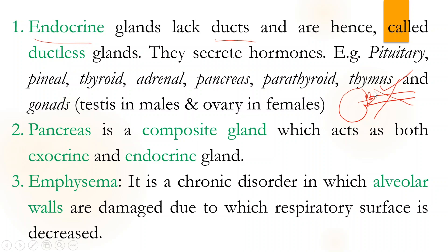Examples of endocrine glands are pituitary gland, pineal, thyroid, adrenal, pancreas, parathyroid, thymus, and gonads. These hormones go straight — they transmit directly.